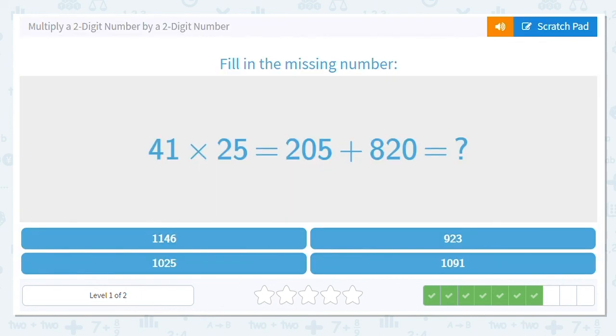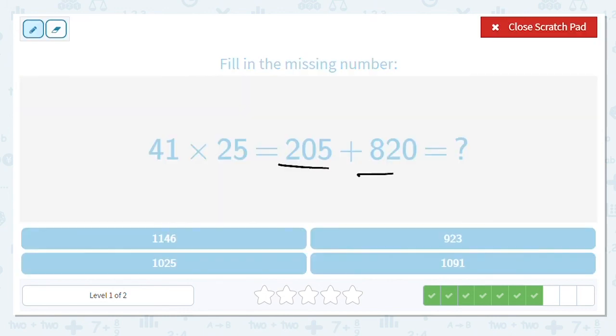Next one, we have 41 times 25 equals 205 plus 820. They gave us our partial products. What do we need to do? We need to add them up. So we have 205 and 820.